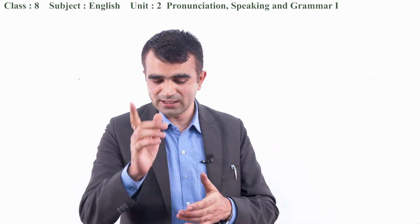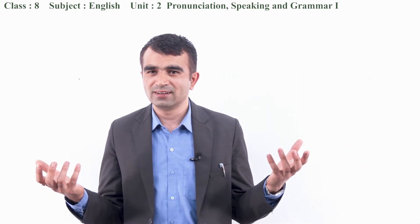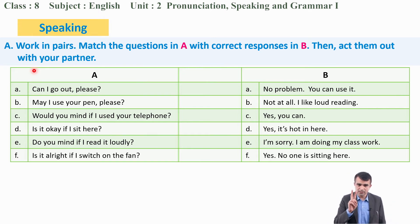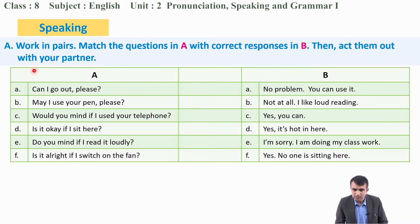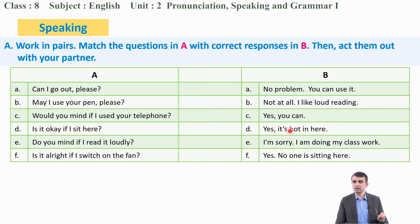The second thing we should do today is speaking. Are you ready for speaking? Under speaking, Activity A: work in pairs. Match the questions in column A with the correct responses in column B, then act them out with your partner. You can join your partner and act them out. But first, do the matching — match the questions with their responses.